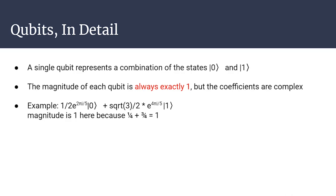The reason we ignore the e^(iθ) term when computing magnitude is because e^(iθ) = cosθ + i·sinθ, which is a complex number with magnitude exactly equal to 1. So when computing the magnitude, we can just ignore it.